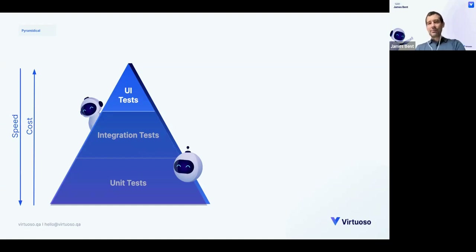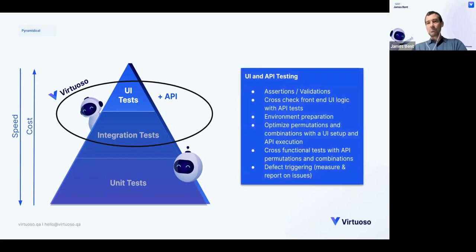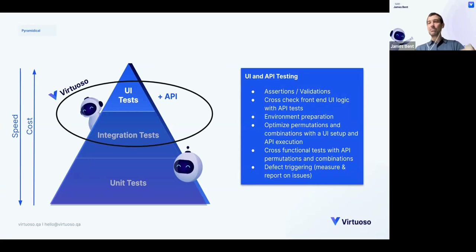Virtuoso is focused predominantly on functional UI testing, but we're actually edging down the pyramid to combine both UI testing and integration tests. With UI and API testing, you can do assertions and validations cross-checking both the front end with API tests, using different environments, optimizing for different permutations and combinations. You can have different data fed in through APIs, and within the UI you can have cross-functional tests with API permutations — all while getting defect triggering, measuring, and reporting on issues.